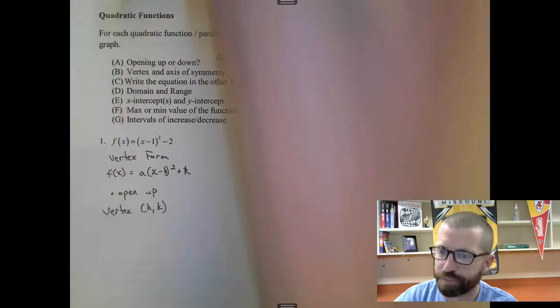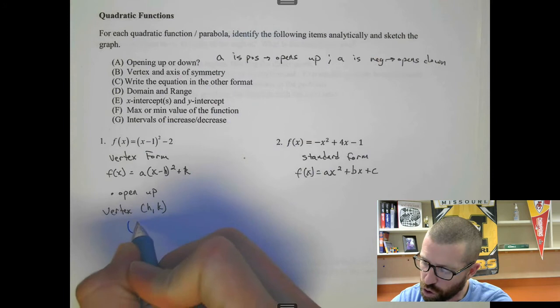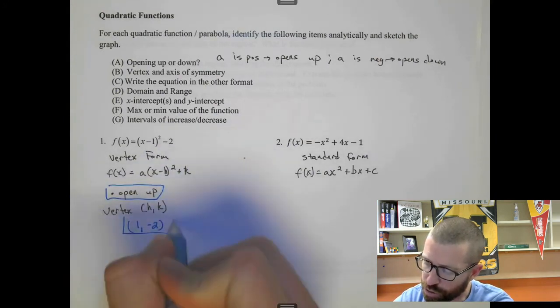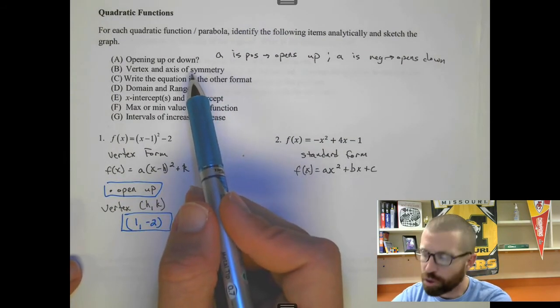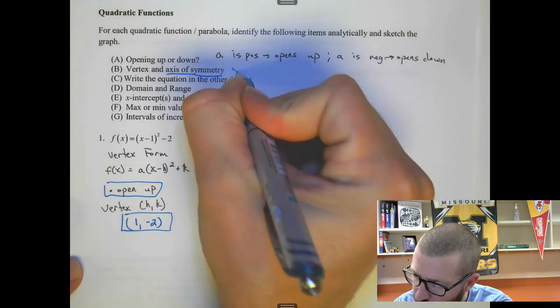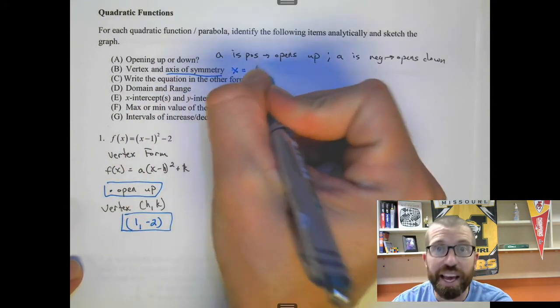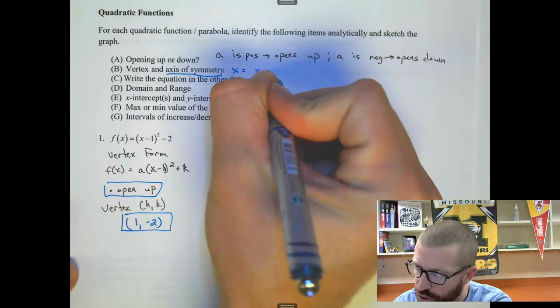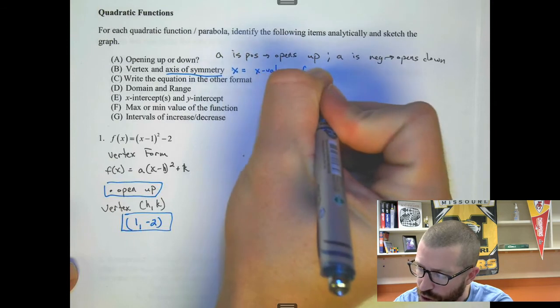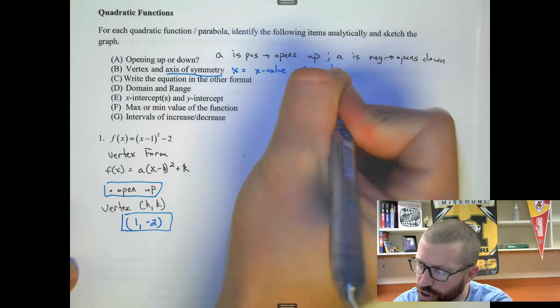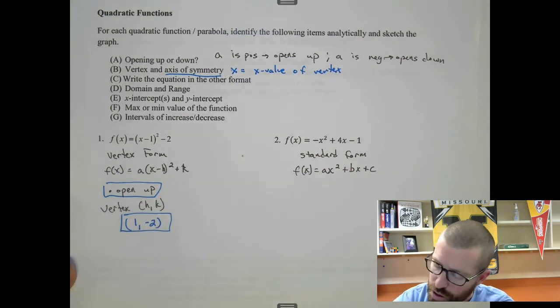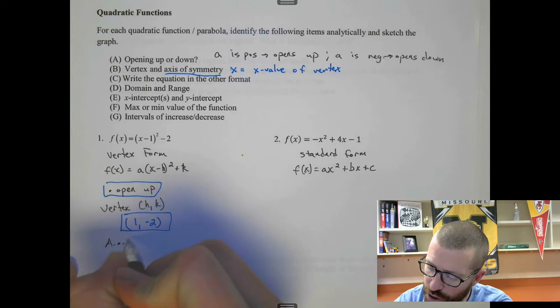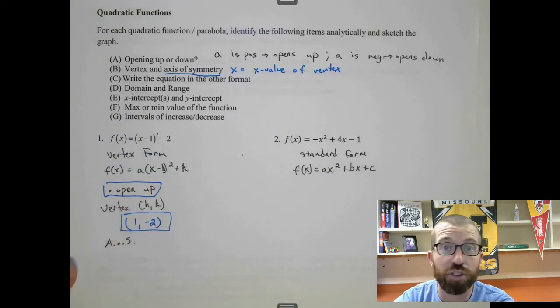It's always the opposite sign inside the parentheses. And then you keep the sign out here. So the vertex is 1 and negative 2. And then the axis of symmetry is always just x equals the x value of the vertex.